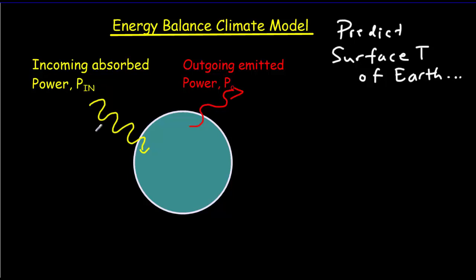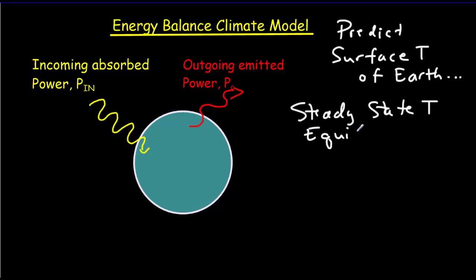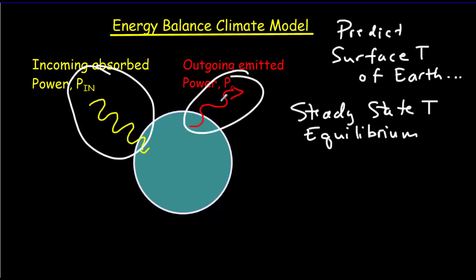Any radiation that's reflected will not increase the temperature of the Earth because it just comes in and then gets reflected back out. What's really important is the radiation that gets absorbed. And if we're going to have a steady state temperature — an equilibrium situation — then that would mean that this incoming power has to be the same size as the outgoing power.